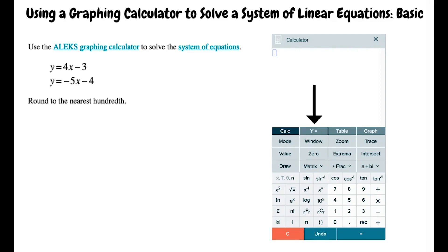Next, navigate to the y equals tab. Now we want to graph both equations in the problem: y equals 4x minus 3 and y equals negative 5x minus 4. Where do you think we want to put these equations in order to plot them? Would I put them in the y1 and y2 windows? Yes, exactly.